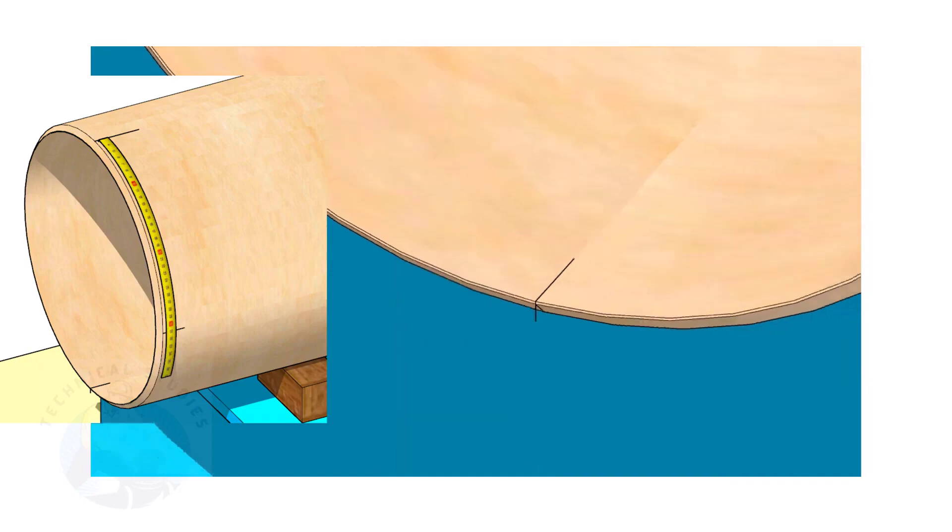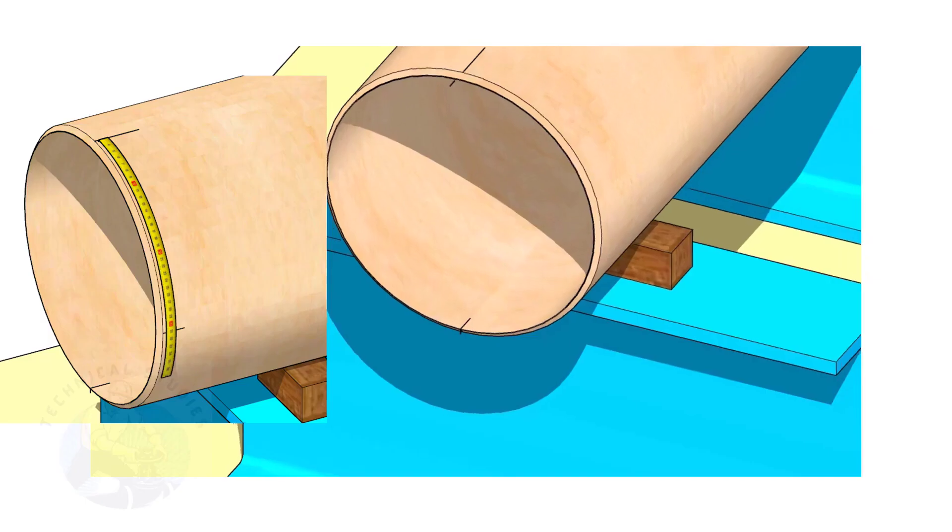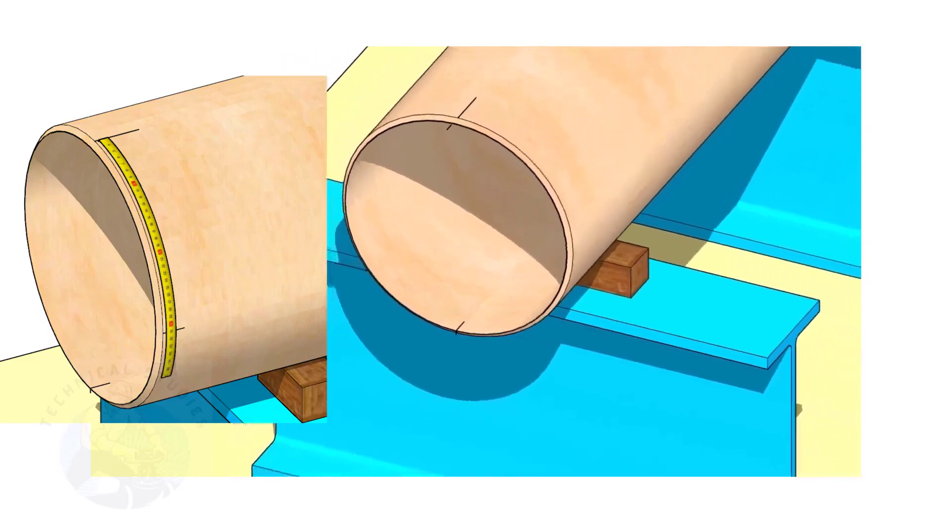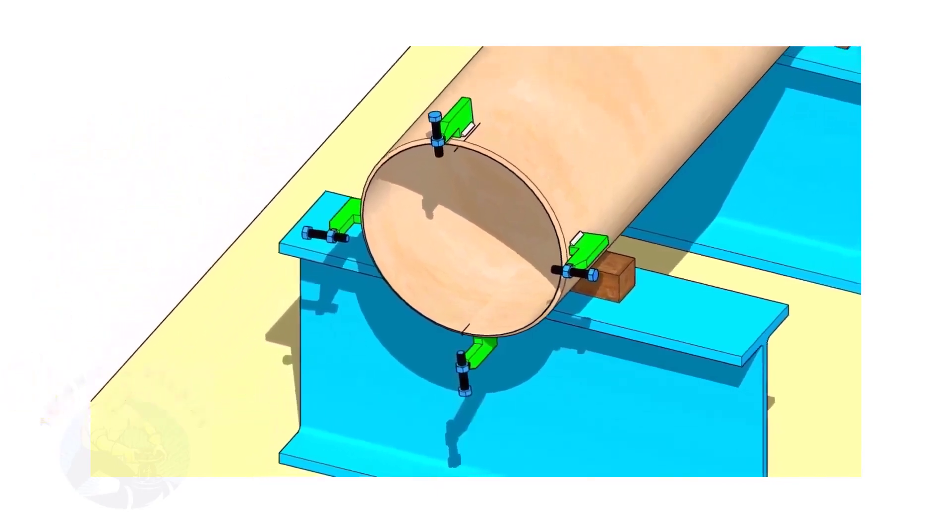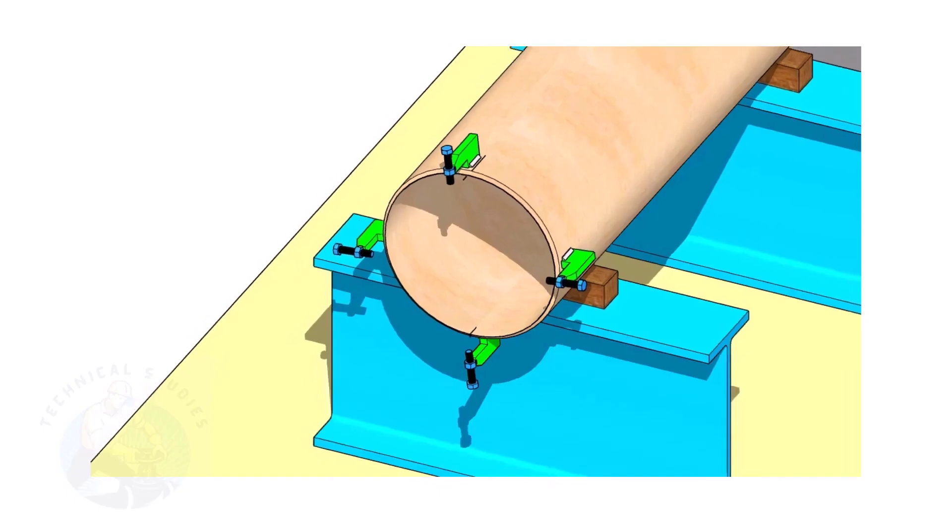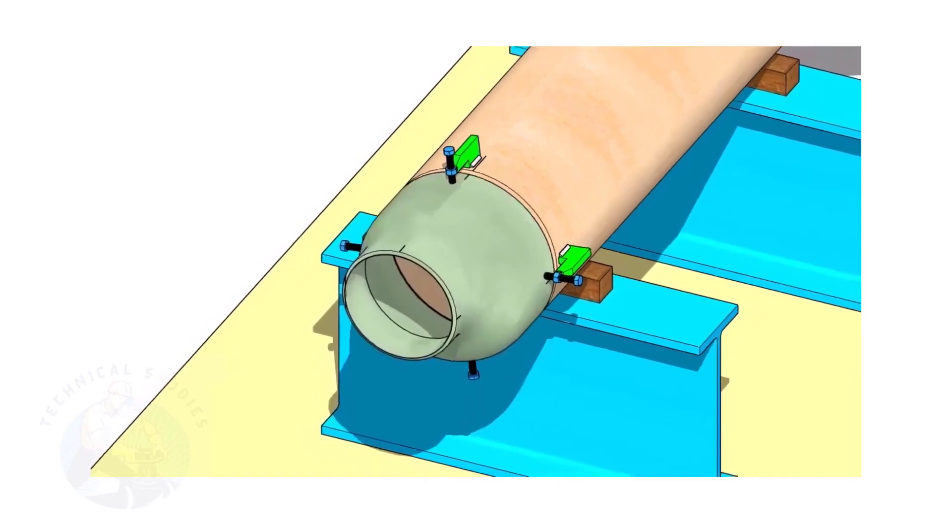Mark the quarter circumference on both sides of the pipe. If you don't have a pipe aligning clamp, tack weld four jack bolts 90 degrees apart, as shown.